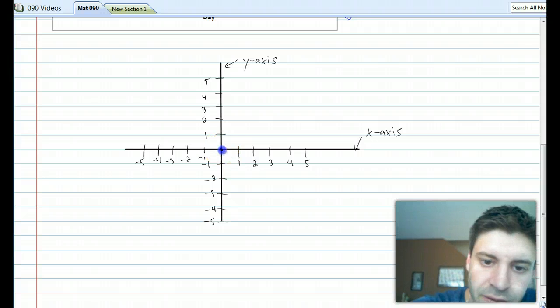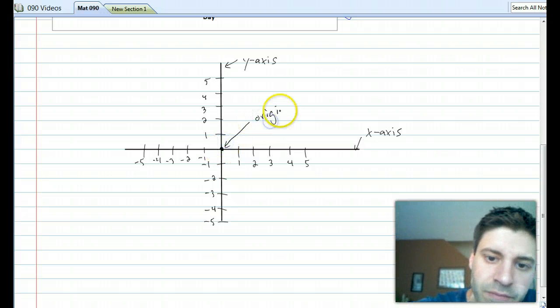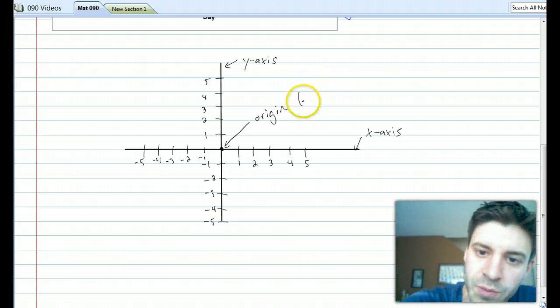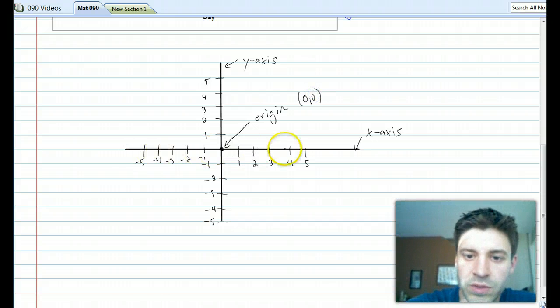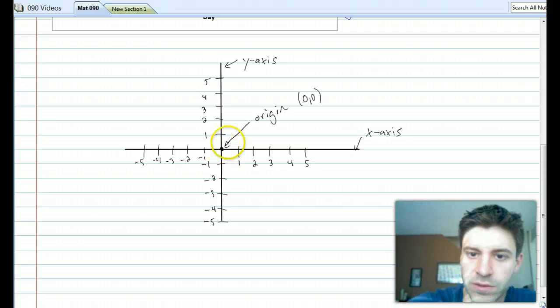This center point here is called the origin. And the origin has an ordered pair, 0, 0. Its horizontal value, or its x value is 0, it's right in the middle, and its vertical value, or its y value, is 0.